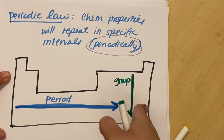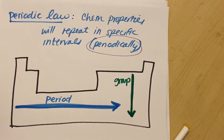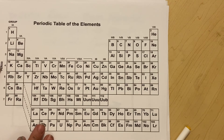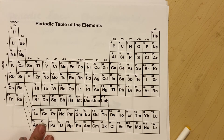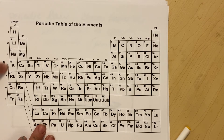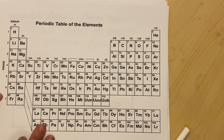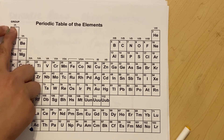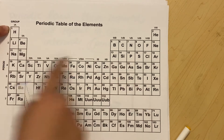You talk about a period of the periodic table or a group of the periodic table, and those are all labeled. Your periods are going to be labeled on the left-hand side: one, two, three, four, five, six, seven. Your group numbers have a more complex numbering system.